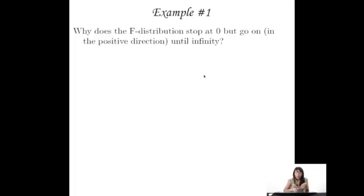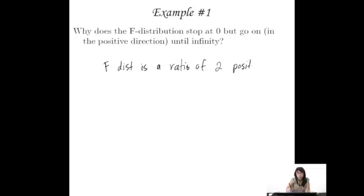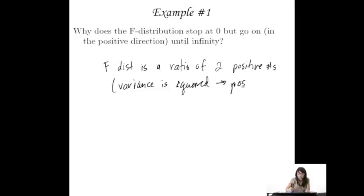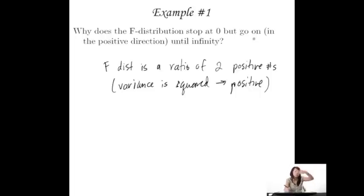Example one: Why does the F distribution stop at zero but go on in the positive direction until infinity? It stops at zero because the F distribution is a ratio of two positive numbers — variance is squared, thus always positive. It goes until infinity because there's no rule that says the numerator can only be so much bigger than the denominator. The numerator can be infinitely larger than the denominator, so it goes on forever.